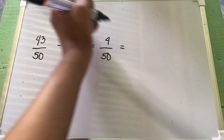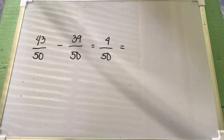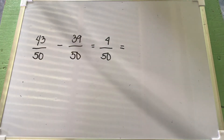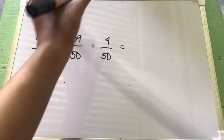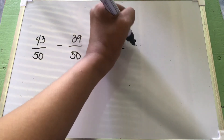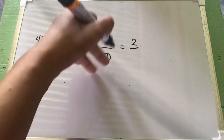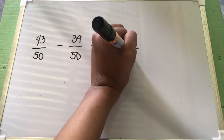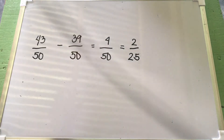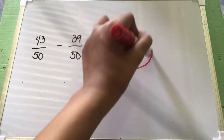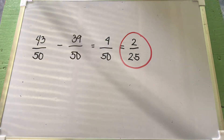Now what we need to do is convert it to its lowest term. 4 and 50 can both be divided by 2. So 4 divided by 2 equals 2, and 50 divided by 2 equals 25. Our final answer is 2 over 25.